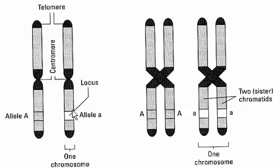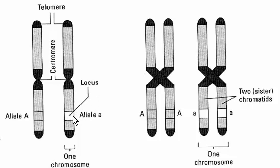The two forms don't have to be the same. The uppercase A indicates the dominant form of the allele, meaning you only need one copy of that allele to be expressed in the phenotype. The lowercase letter represents the recessive form of the allele. So dad is contributing a dominant allele, mom is contributing a recessive allele. The actual physical position of the alleles on the chromosomes is referred to as the locus.